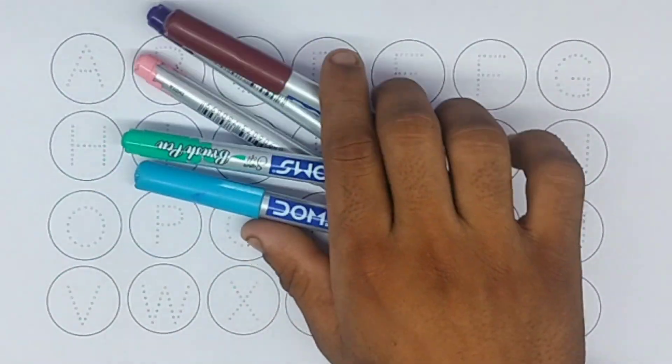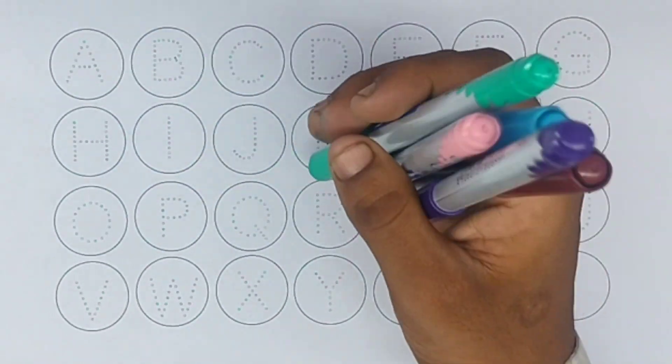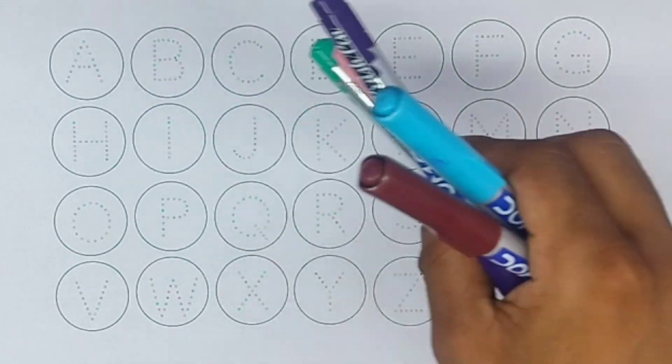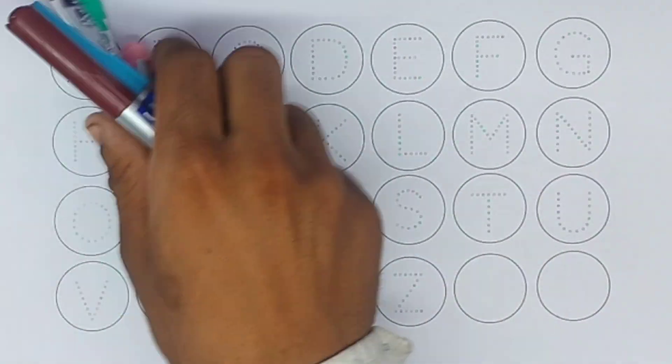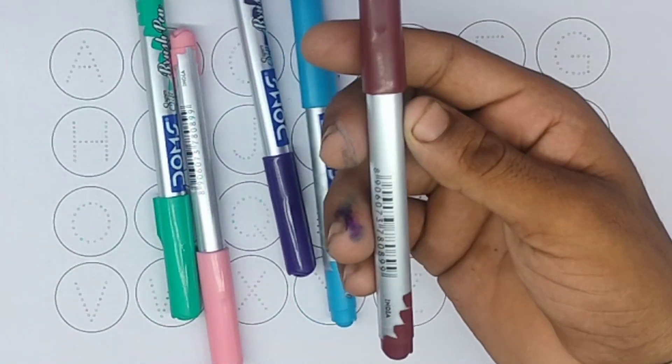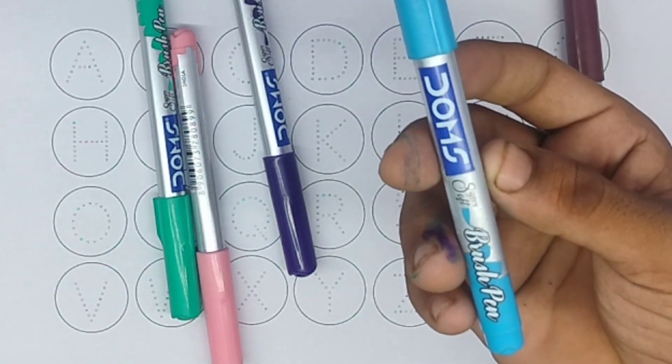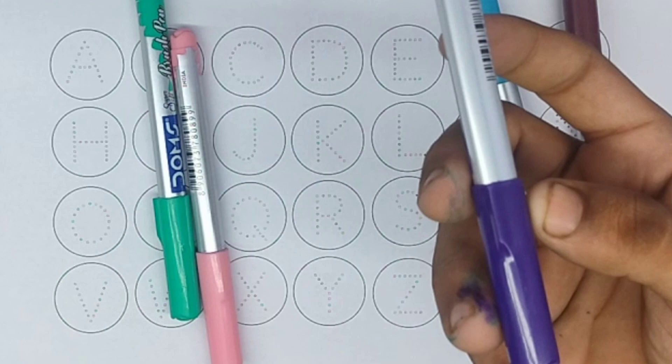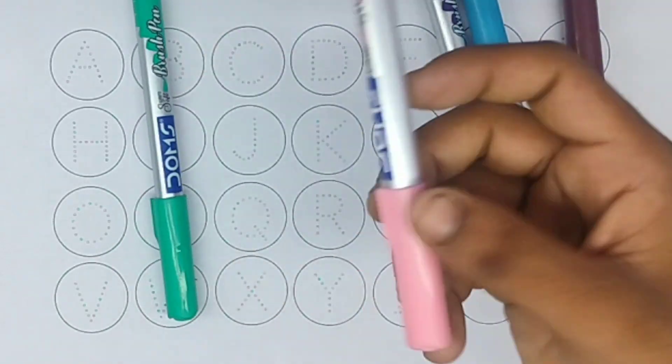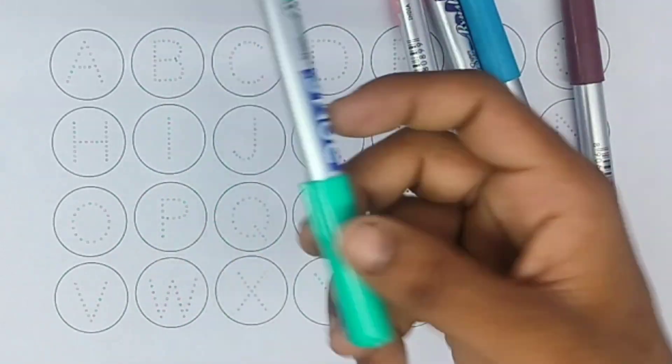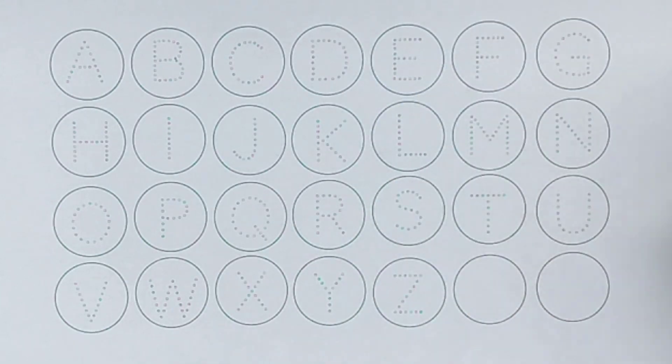Hello guys, today learn alphabet A B C D. Now colors: brown color, sky blue color, purple color, light pink color, light green color.